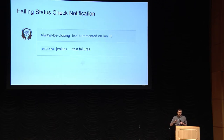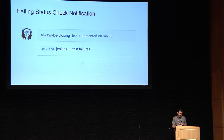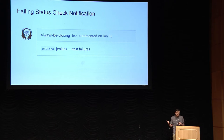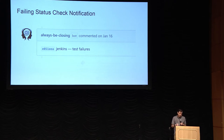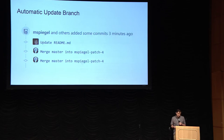Status checks — failing ones — don't get notifications by default in GitHub. The bot will post a comment, and comments on a pull request trigger a notification. So if your test fails, it'll tell you immediately, which I think is really cool.